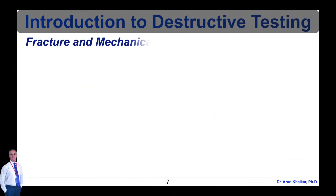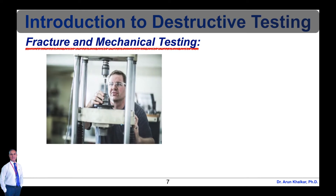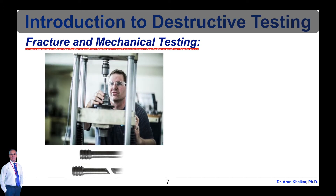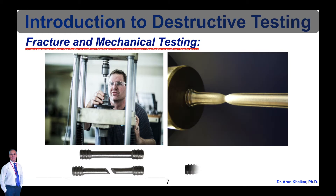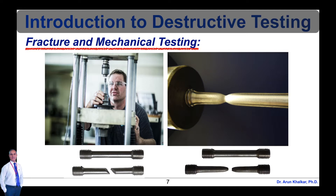Next is fracture and mechanical testing. This includes different types of destructive testing methods such as tension test, bend test, sharp impact test, Pellini drop weight testing, pill test, crush testing, and pressure and fracture testing. Fracture and mechanical tests can be carried out on different materials, such as welded polymers, including plastic pipes.